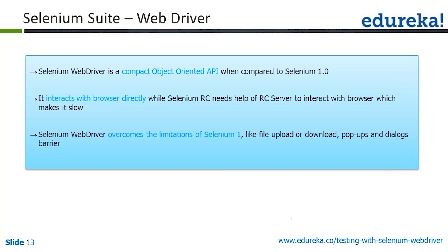Selenium WebDriver is a compact, object-oriented API compared to Selenium 1.0. It interacts with the browser directly — there is no interpreter in between, so your WebDriver script directly communicates with the browser. WebDriver overcomes the limitations of Selenium 1, such as inability to handle file upload or download and pop-ups and dialog barriers — all these problems were resolved with Selenium WebDriver.